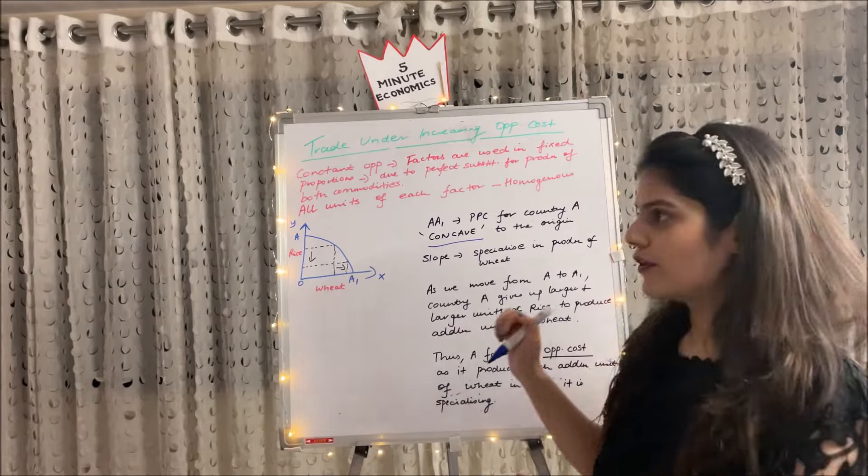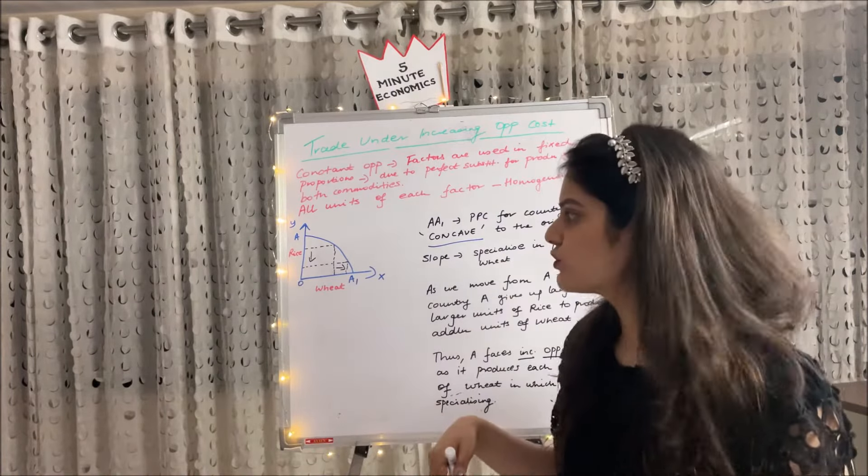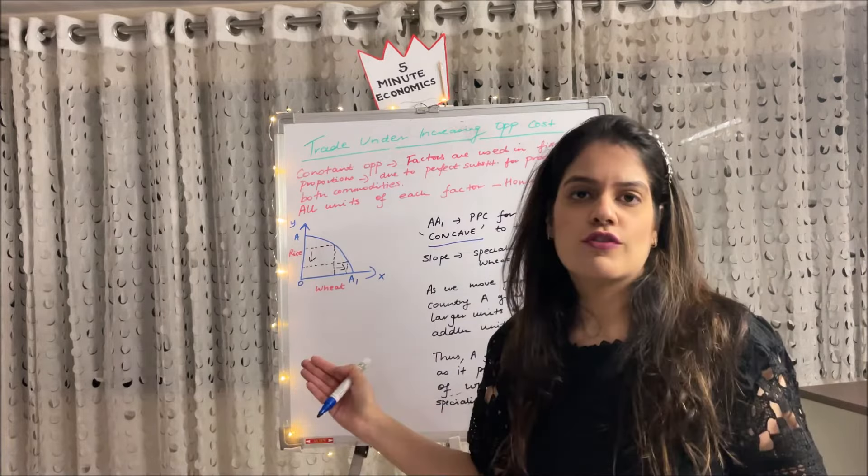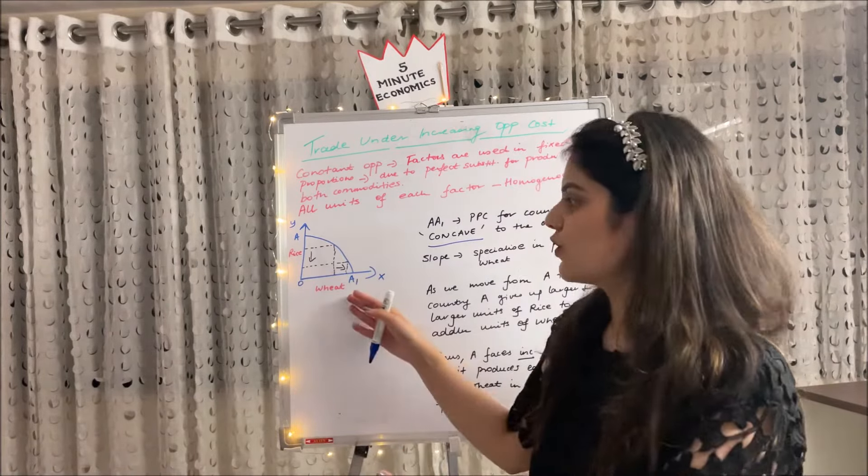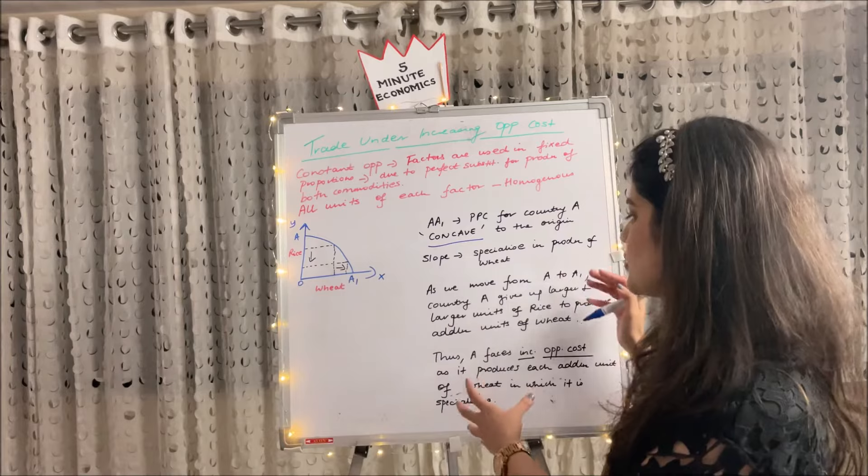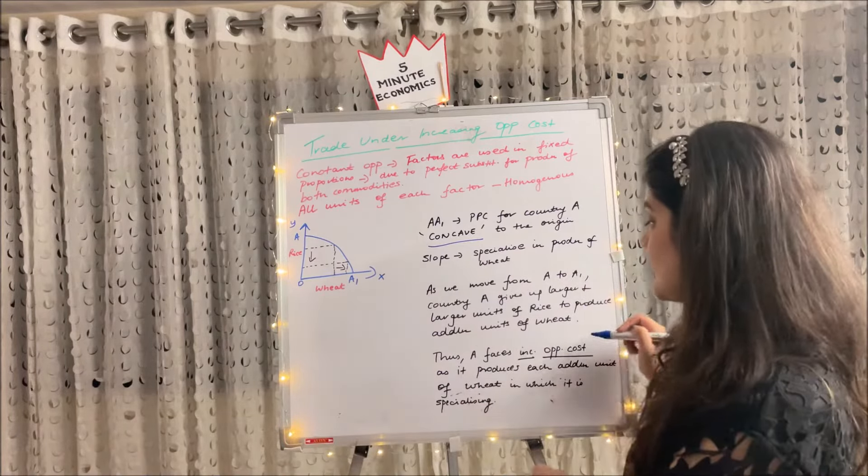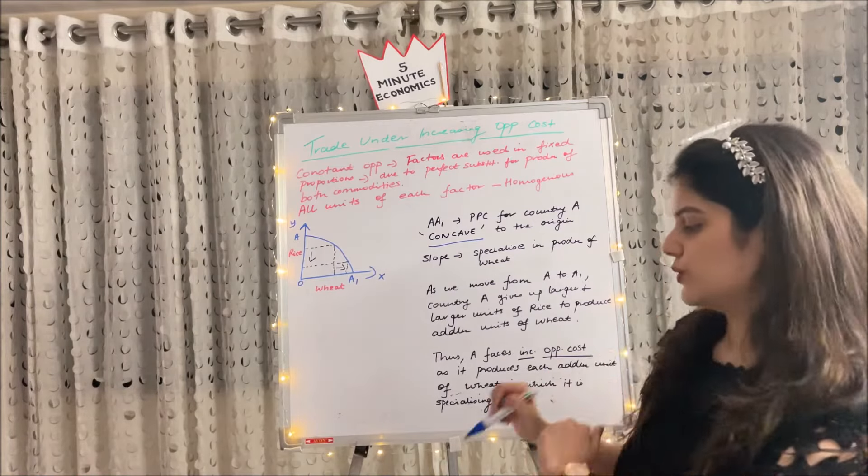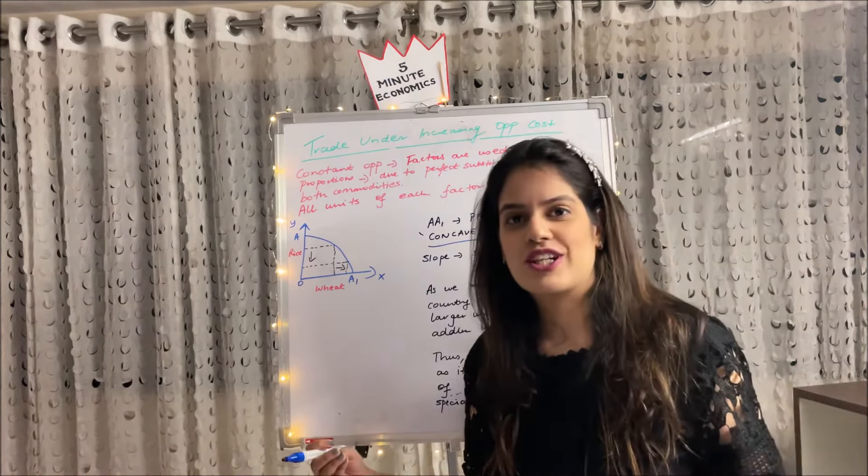So basically it's showing, for example, that time we were giving 10 units of rice to get 10 units of wheat. Here, maybe we are giving 20 units of rice to get additional 10 units of wheat. And this is what increasing opportunity cost is. Basically, A faces increasing opportunity cost as it produces each additional unit of wheat in which it is specializing.